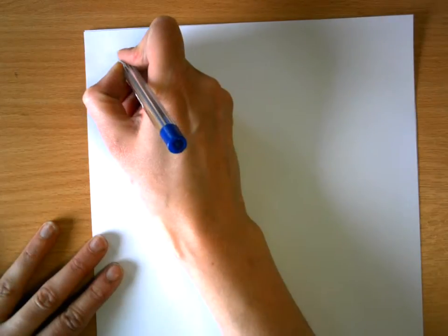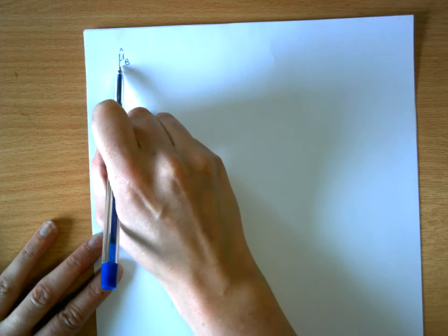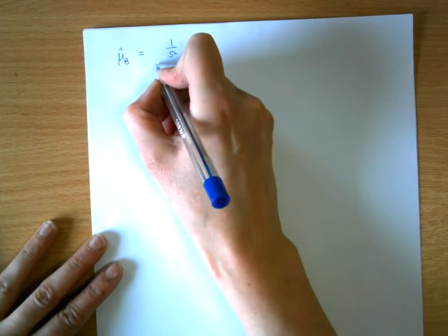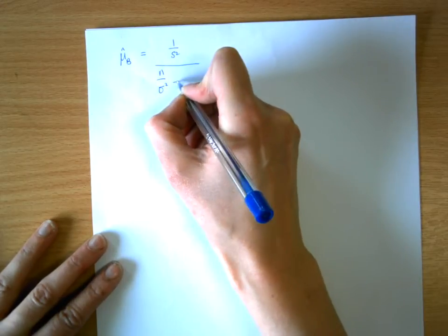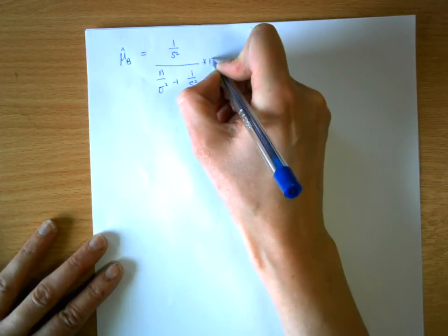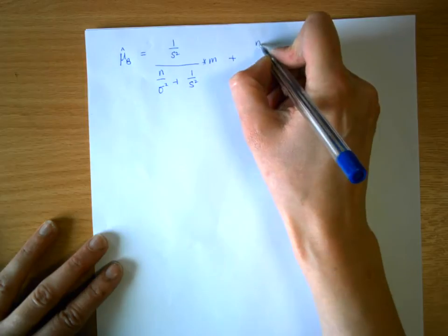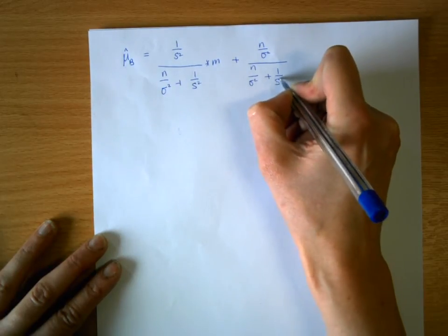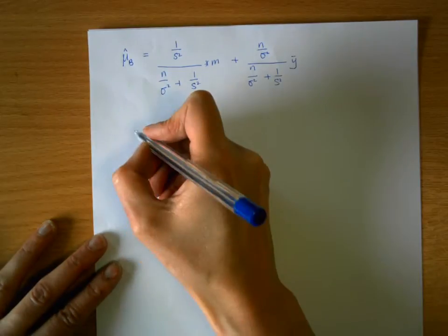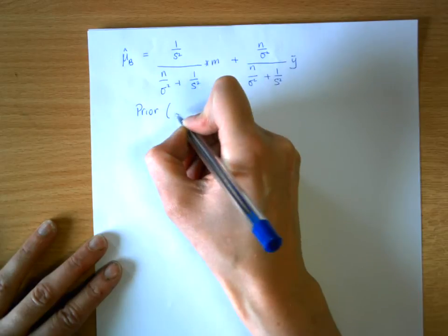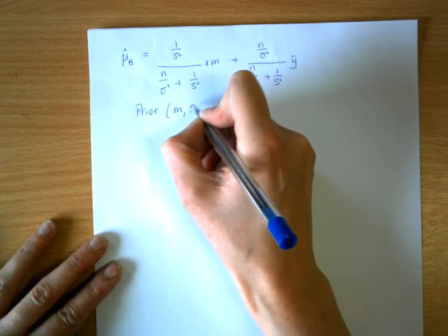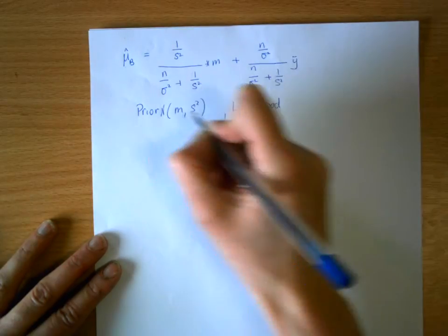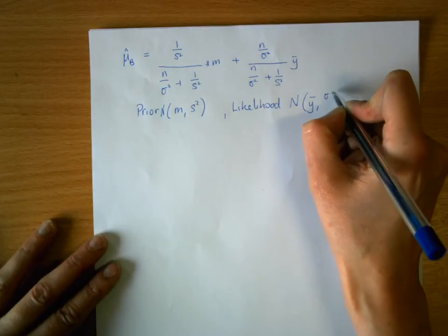We start off by writing down our expression for our Bayesian mean. We'll use mu-hat B for Bayesian, which equals (1/s²) divided by (n/σ² + 1/s²) times m, plus (n/σ²) divided by (n/σ² + 1/s²) times y-bar. The prior here has parameters m and s², and the likelihood is normal with mean y-bar and variance σ²/n.